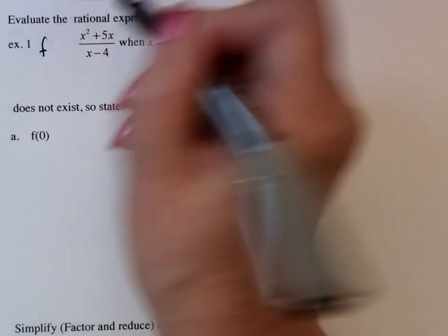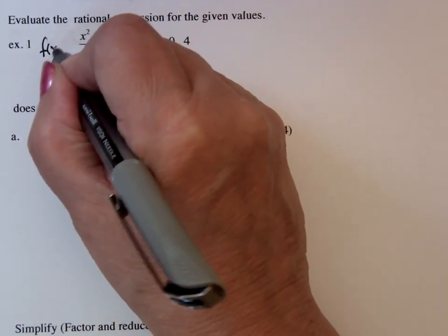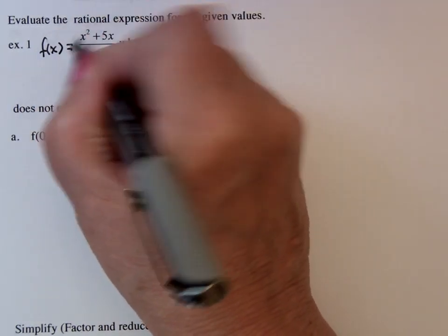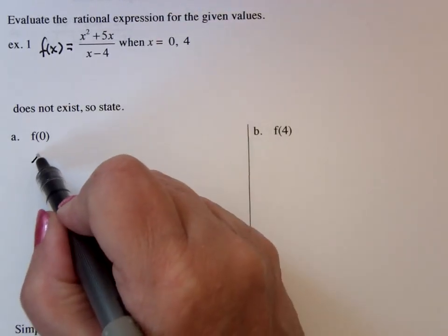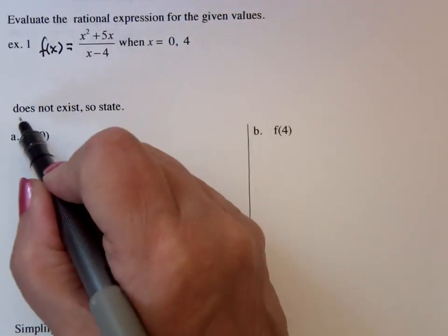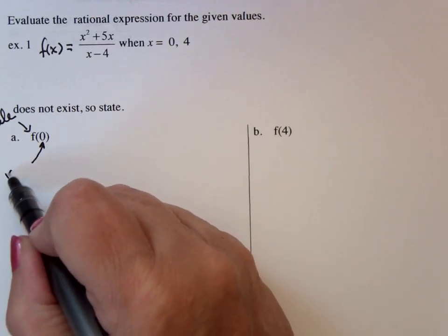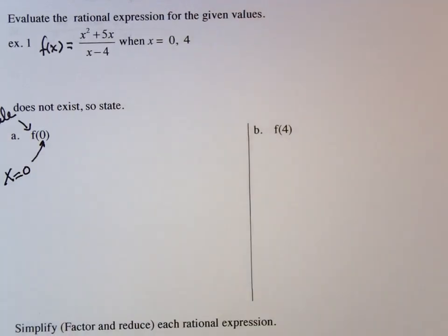So if we were to name this rational expression f of x, we would be looking for f of 0 because this says in the rule named f, replace all of the x's by 0.